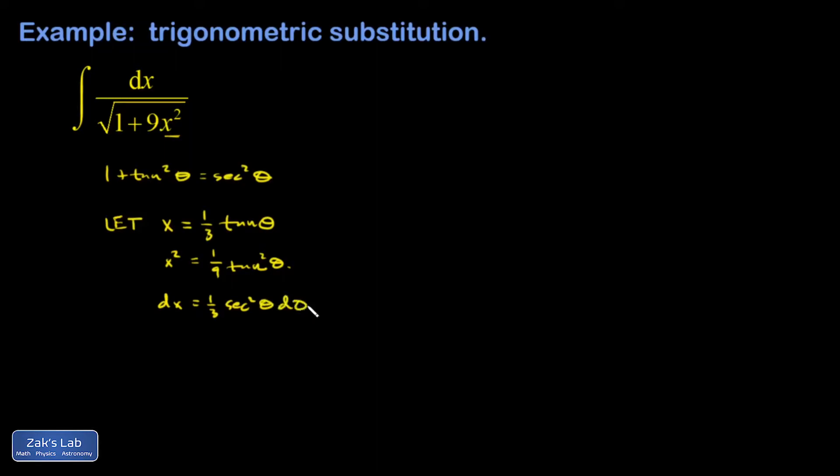So that's 1/3 secant squared theta d theta, and I'm ready to transform my whole integral. So I end up with a 1/3 secant squared theta d theta over the square root of 1 plus 9 times x squared, which is 1/9 tangent squared theta.